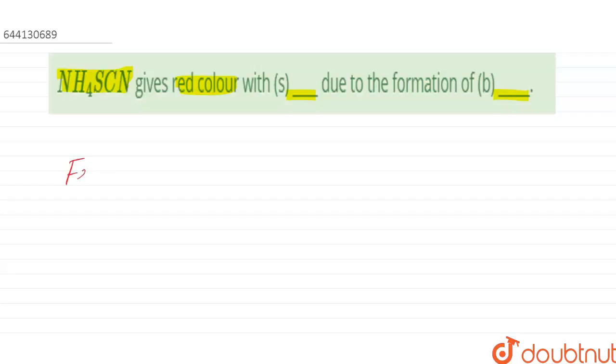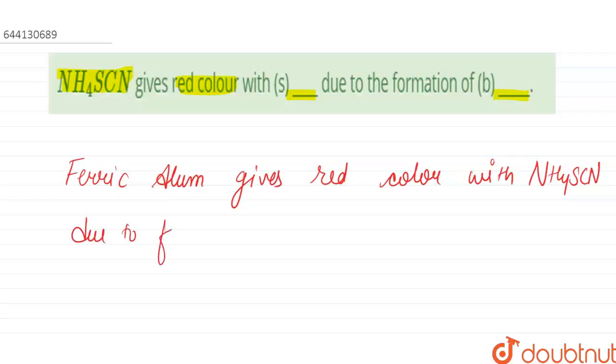color. Ferric alum gives red color with ammonium thiocyanate due to formation